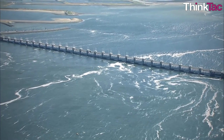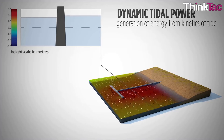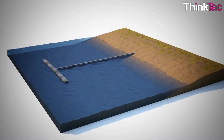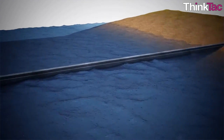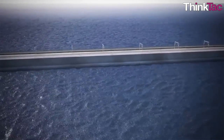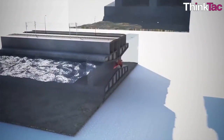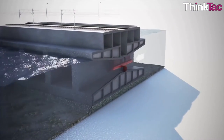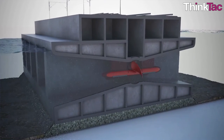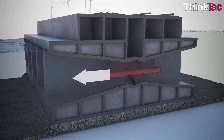The third main type is called dynamic tidal power. This involves building a T-shaped dam that extends 30 to 60 kilometers into the sea with a perpendicular barrier at the far end, parallel to the coast. This barrier interferes with the horizontal movement of waves, and the water level difference on both sides of the dam is enough to generate power in the turbines situated in the dam.